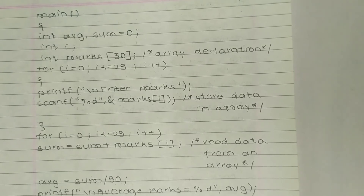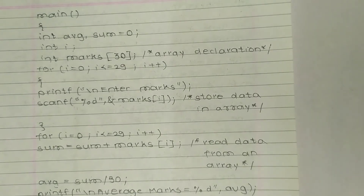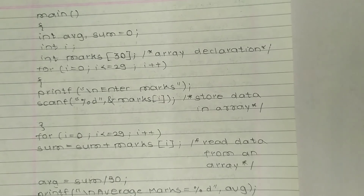Now, for(i = 0; i <= 29; i++) — 29 is written because i starts from 0, so from 0 to 29 there are 30 total elements. Inside the loop: printf("Enter marks") to tell the user to enter their marks. Then scanf("%d", &marks[i]) — %d is for integer, and here all variables are integers.